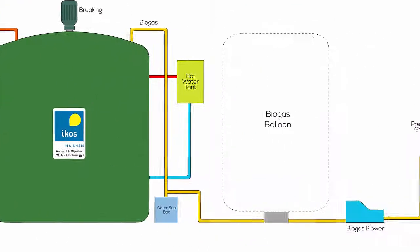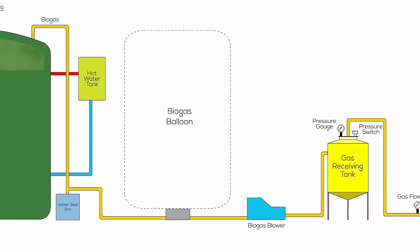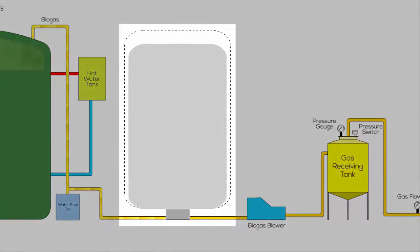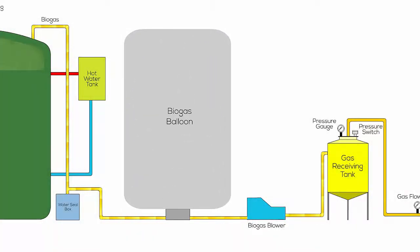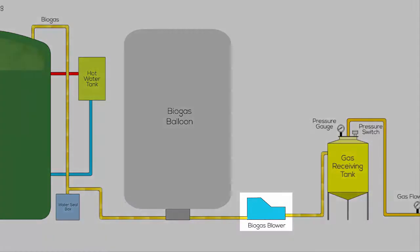The biogas generated in the anaerobic digester is stored inside an inflating biogas balloon made of neoprene rubber or PVC. The stored biogas is then used after pressuring through a biogas blower and a pressurized biogas tank.